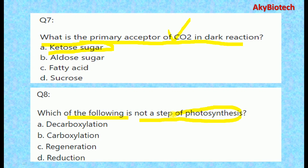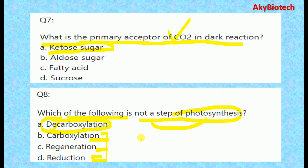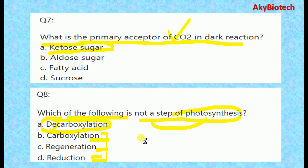Question eight: Which of the following is not a step of photosynthesis? The three steps of photosynthesis are carboxylation, regeneration, and reduction. The correct answer — the one that is NOT a step — is decarboxylation.